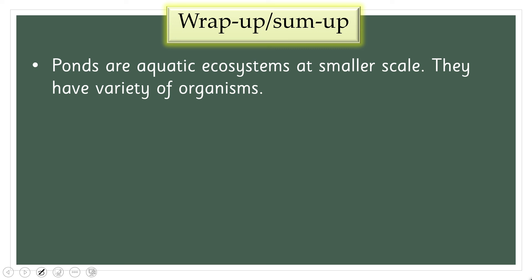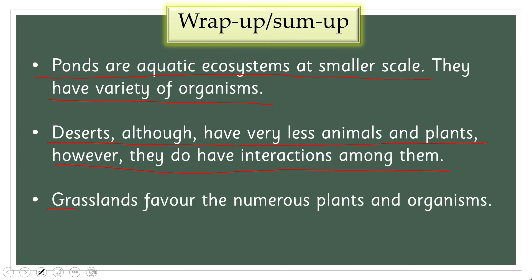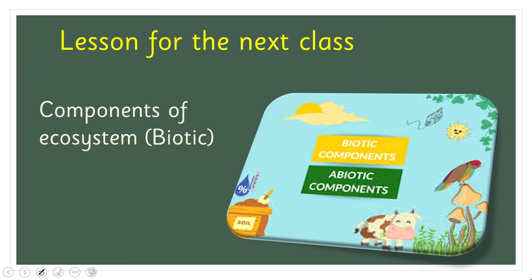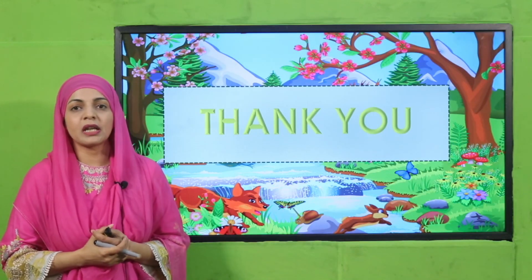All students have learned that ponds are aquatic ecosystems at a smaller scale with a variety of organisms. Deserts, although having very few animals and plants, do have interactions among them. Grasslands favor numerous plants and organisms. In the next lecture we will discuss the components of ecosystems. Keep everybody around you safe, have a good day, thank you so much, and Allah Hafiz.